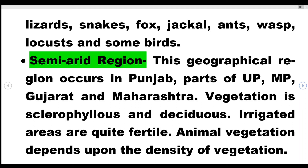Sclerophyllous means vegetation where leaves are hard and inter-nodes are condensed. Deciduous means plants shed their leaves. Irrigated areas are very fertile. Animal density depends on the density of vegetation in this region.